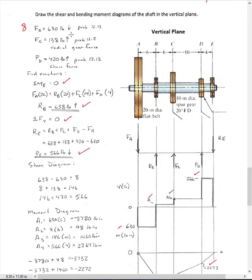We know that our force at A due to the flat belt pulley from 12-13 is 630 pounds. That's going in this direction. The bearings are where the shaft takes up its reactions. Okay, so the bearing reaction at B. Then we have the force at C, which is essentially the radial gear force, the 138 pounds. And then we had the force at D, which is the 420 pounds from the chain sprocket. And then we'll have a reaction at E, too.